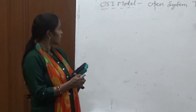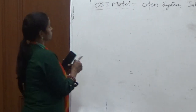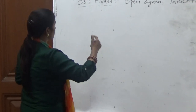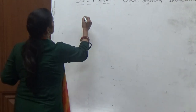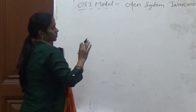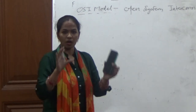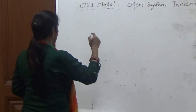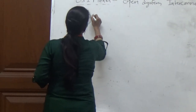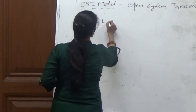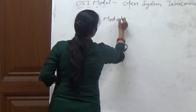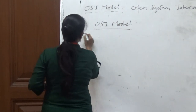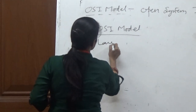In the OSI model, we show the working of communication in terms of layers. The OSI model basically contains seven layers.